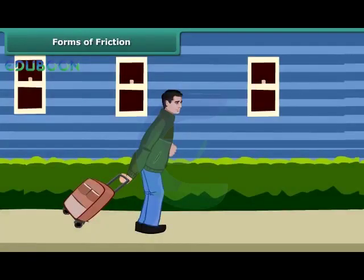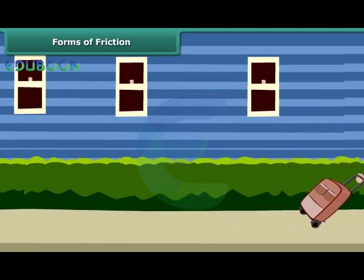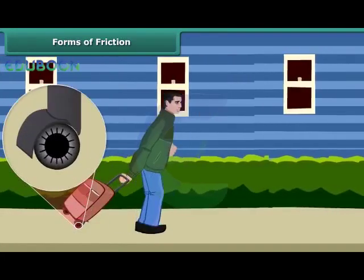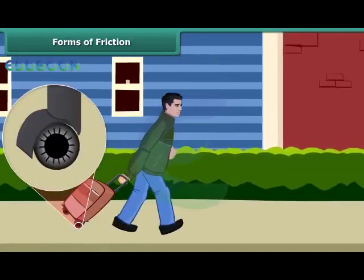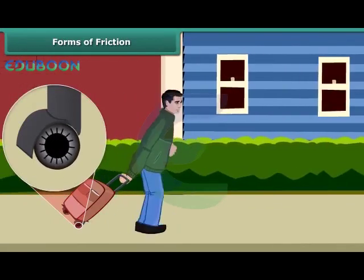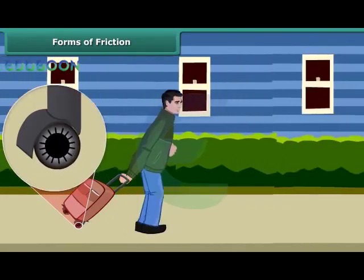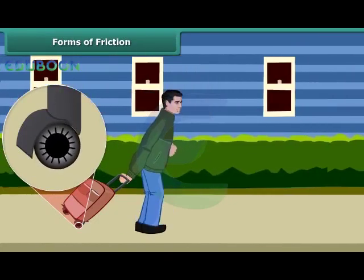You must have seen suitcases and other pieces of luggage fitted with rollers. Even a child can pull such pieces of luggage. The rollers reduce friction and allow objects to roll. It is always easier to roll than to slide a body over another. That is the reason it is convenient to pull luggage fitted with rollers.